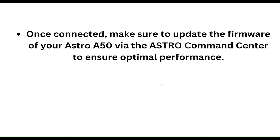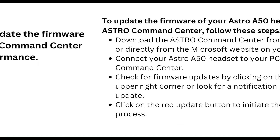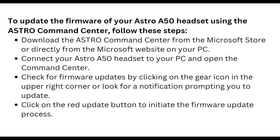To update the firmware of your Astro A50 headset using the Astro Command Center, follow these steps. First, download the Astro Command Center from the Microsoft Store or directly from the Microsoft website on your PC. Connect your Astro A50 headset to your PC and then open the Command Center. Check for a firmware update by clicking on the gear icon in the upper right corner, or look for a notification prompting you to update. Click the red update button to initiate the firmware update process.